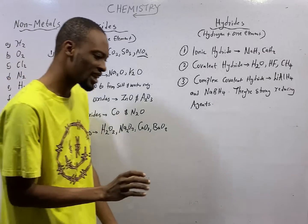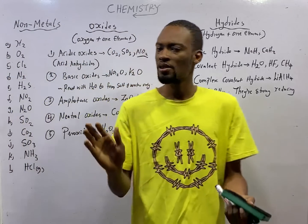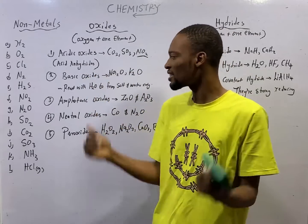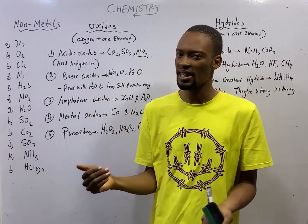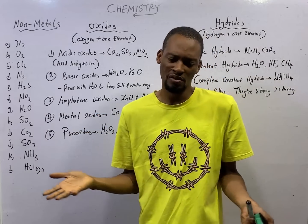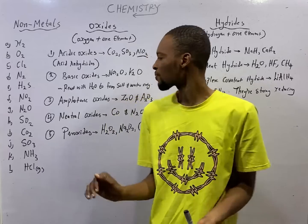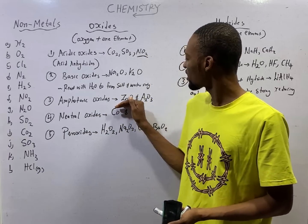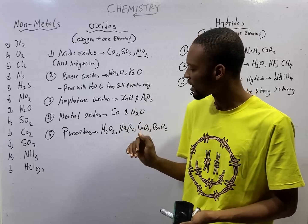Amphoteric oxides, they behave as both acidic oxides and basic oxides. They have the properties of both acidic oxides and basic oxides. They are amphoteric oxides. This is because they form complex ions in variable states. Examples of amphoteric oxides are zinc oxide and aluminum oxide.